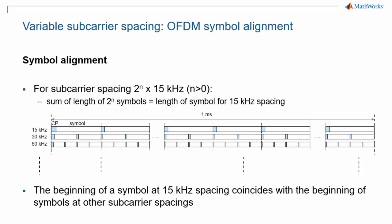Getting a little deeper into the detail of the slot structure, 5G uses the same idea as LTE, where the cyclic prefix for the first OFDM symbol of a slot is longer than the cyclic prefix of the next six. This begs the question of how symbols align when there is a mix of subcarrier spacings within the same bandwidth. 5G NR defines the cyclic prefix length for all subcarrier spacings in such a way that OFDM symbols align regularly, irrespective of the subcarrier spacing, as illustrated on this picture.